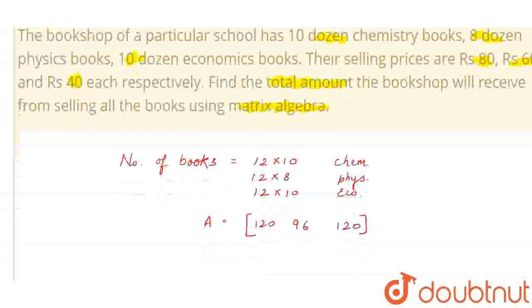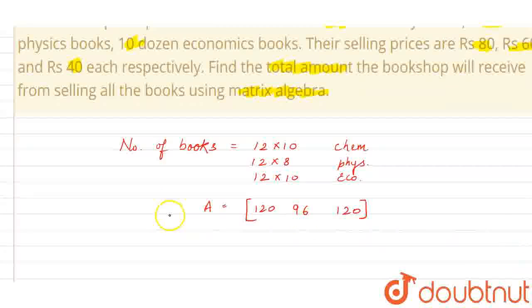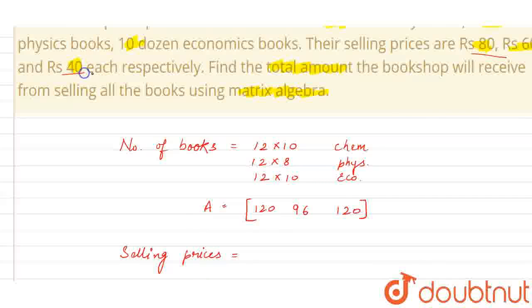Now, we are given the selling prices also. If we convert the selling prices into the matrix form, we'll get B. Let us take this matrix as B and we'll be writing it as 80, 60, and 40. These are the selling prices for the chemistry, physics, and economics books, respectively.